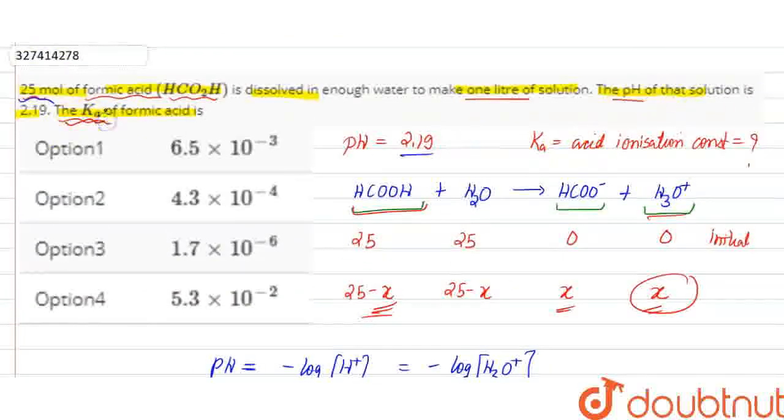The question asks what is the Ka for formic acid. If I look at option number 3, this is exactly equal to 1.7 × 10⁻⁶. So this will be the answer, option number 3. Thank you.